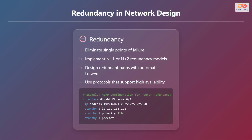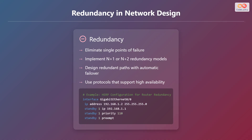Now let's discuss redundancy in network design. Redundancy helps to eliminate single points of failure. Implement N+1 or N+2 redundancy models, and design redundant paths with automatic failover. Use protocols that support high availability. Here is an example of HSRP configuration for router redundancy — it configures a virtual IP address and assigns priority for failover.